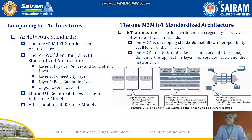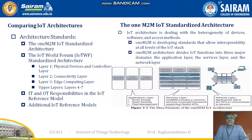In the IoTWF architecture, we have a seven-layer network. This includes a physical layer, controllers, a connectivity layer, and an edge computing layer, along with additional layers. The IT and IoT responsibilities are defined in the IoT reference model. Additional IoT reference models are also going to be set.